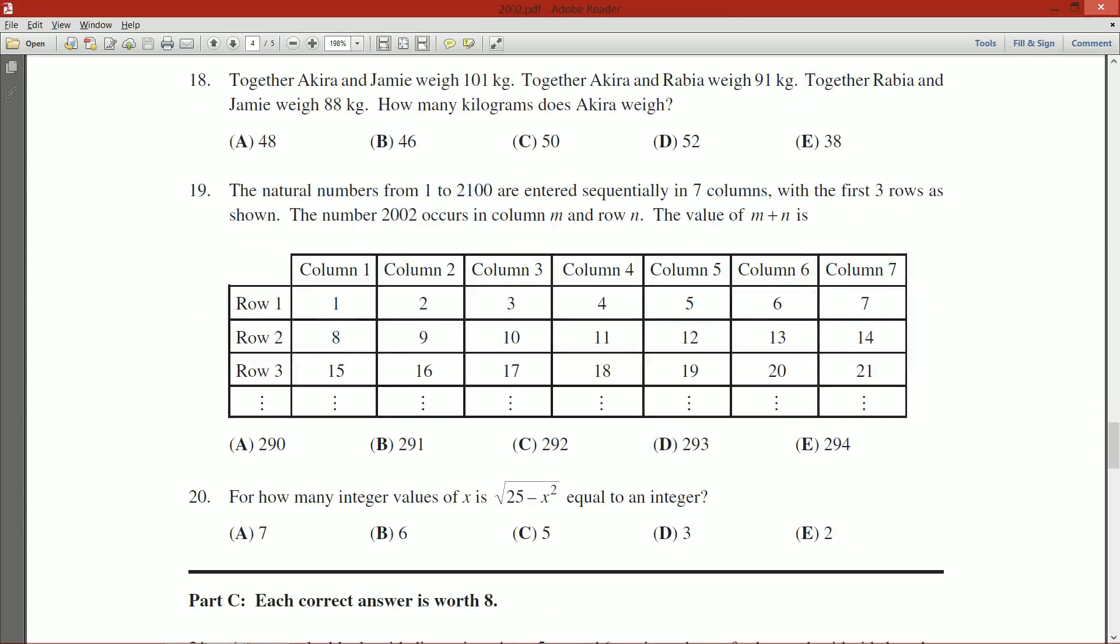So the first thing I'm noticing, even before I finish reading the question, is that column 7 contains all the multiples of 7. And column 1 contains all the numbers that when we divide by 7, we get a remainder of 1. And I think this is true for all the columns. Column 4 will contain all the numbers that when I divide by 7, give me a remainder of 4. But that's just what I'm noticing.